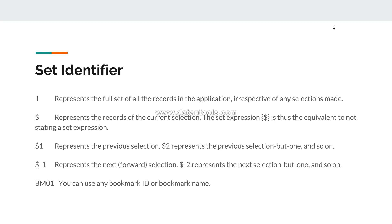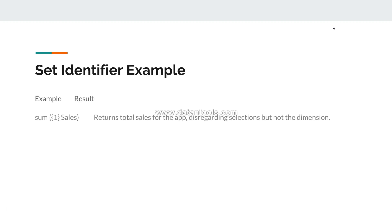Now let's see some examples. The first is Sum({1} Sales) — a straightforward sum with '1' in curly brackets. It returns the total sales for the application, disregarding current selections but not the dimension. So whatever front-end selections you make will be disregarded, but any specified dimension will still be picked up from the chart.